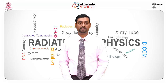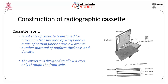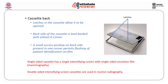Let us go into detail about the construction of the radiographic cassette. The front of the cassette is designed for maximum transmission of X-rays and is made of carbon fiber or other low atomic number material of uniform thickness and density. The back side of the cassette is lead-backed with at least 0.12 mm of lead so that backscatter radiation does not come in. A small access window on the back side in one corner permits flashing of patient identification on the film. Single-sided cassettes with a single intensifying screen and single-sided emulsion film are used for mammography, while double-sided intensifying screens are used for routine radiography.